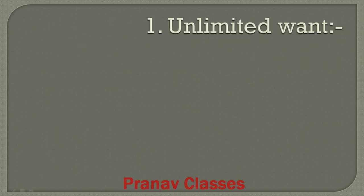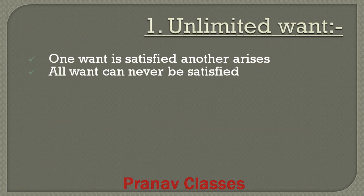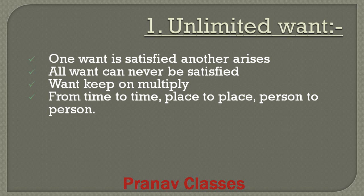First: unlimited wants. Wants are unlimited — they just keep on increasing. The characteristics of wants are as follows: once one want is satisfied, another arises. If you have a bike, you need a car, and so on. All wants can never be satisfied because by our very nature, wants keep multiplying with civilization and technology.